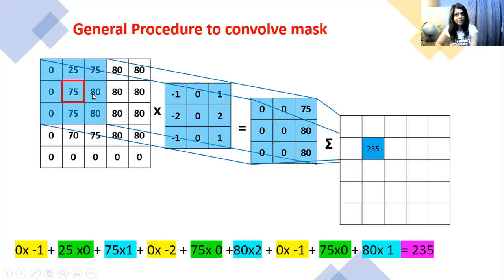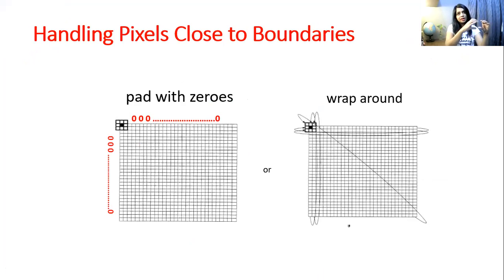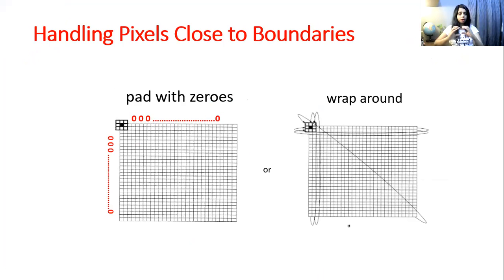Again we replace this middle pixel — that is 80 — with the new value. Every time we put the mask at a particular position, we shift it towards the right in the image, then bring it to the second row and shift again, then bring it lower and shift again.